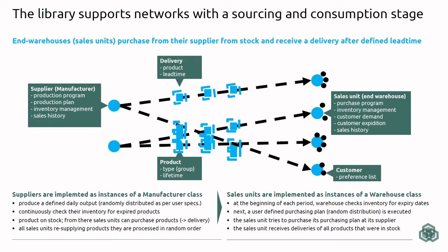The sales units face consumers that enter their stores with defined preferences. For example, a given consumer might prefer product A, but if product A is not available the consumer will accept product B, and if product B is not available maybe this consumer also accepts another product.